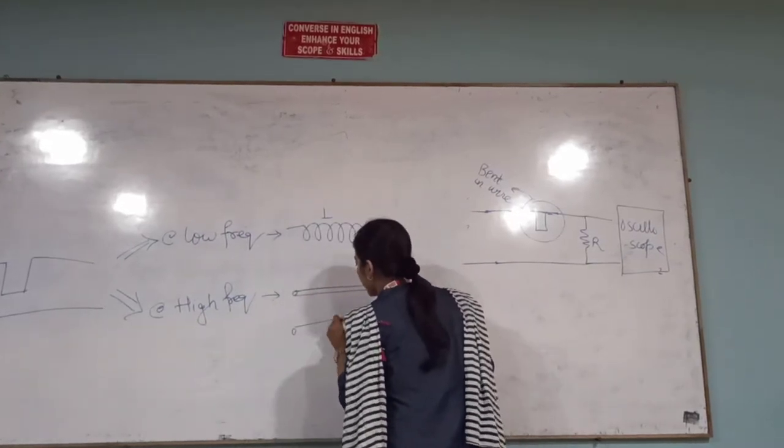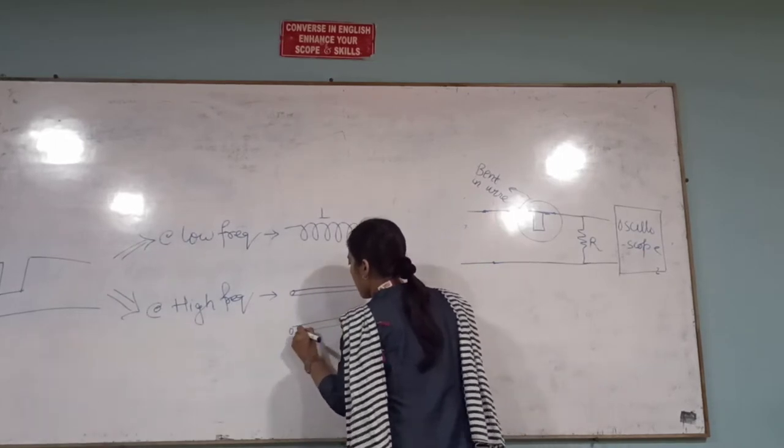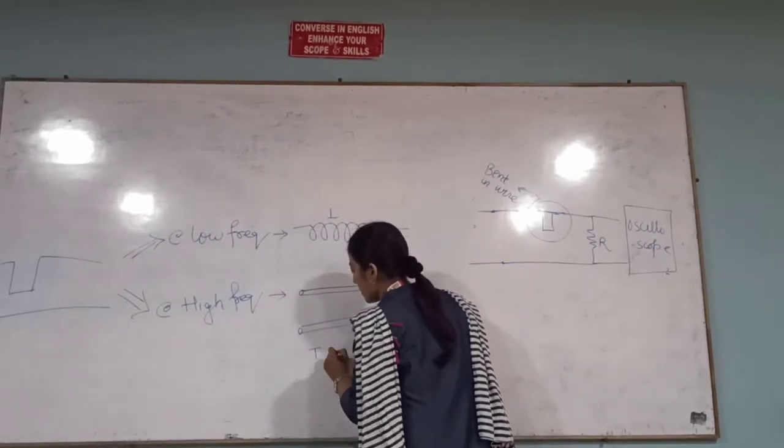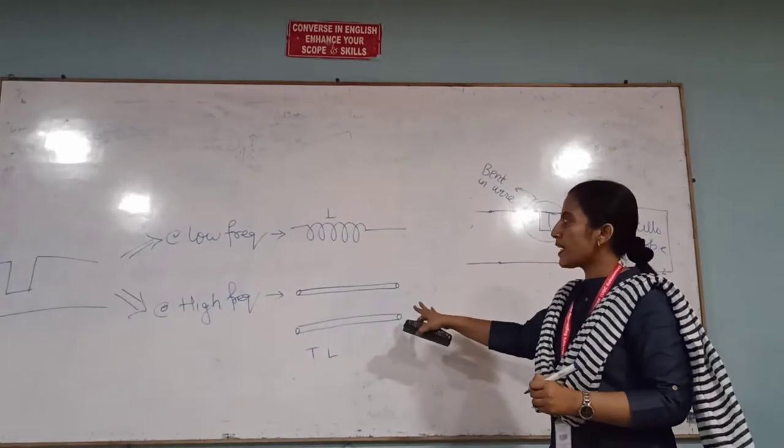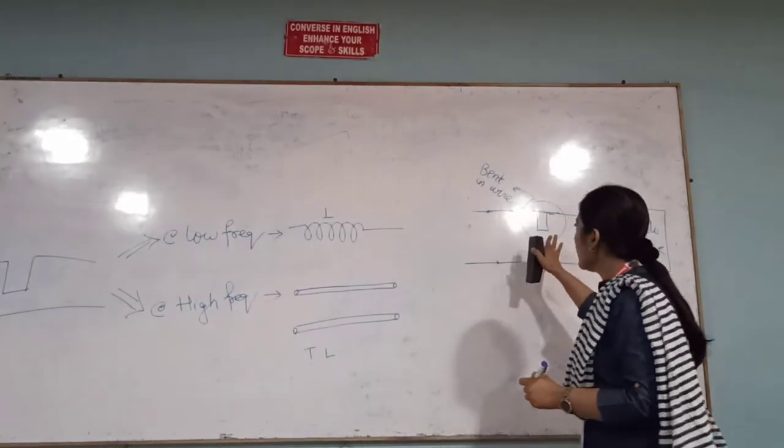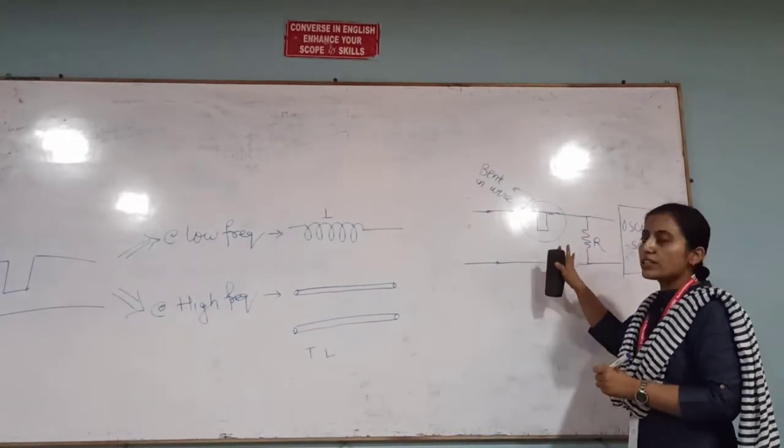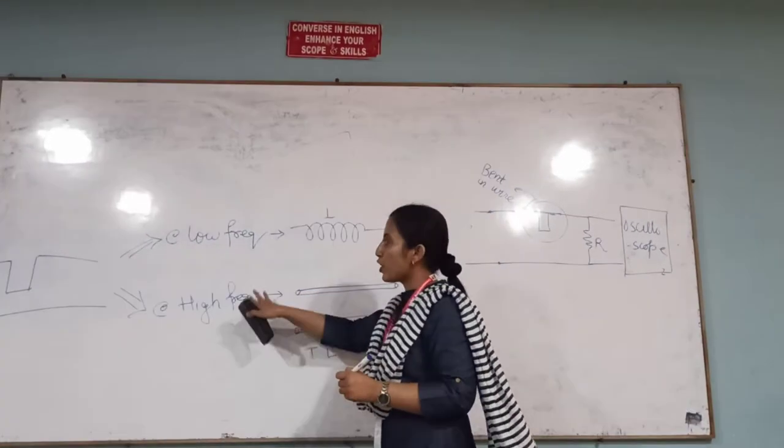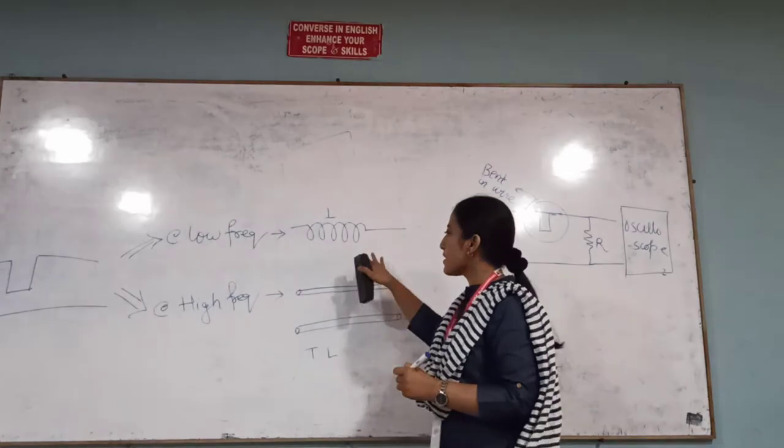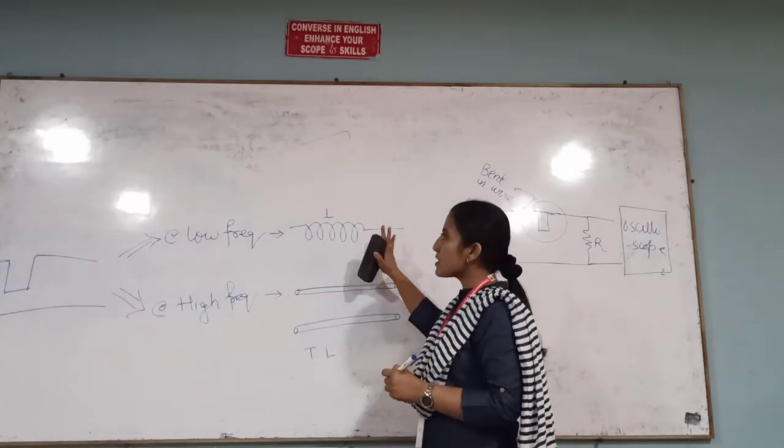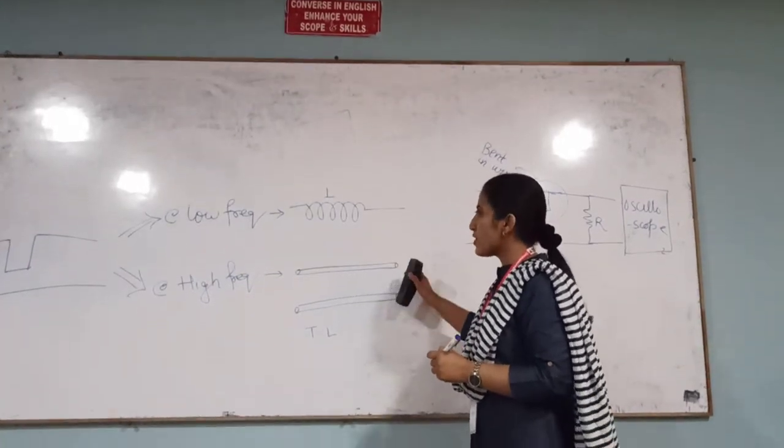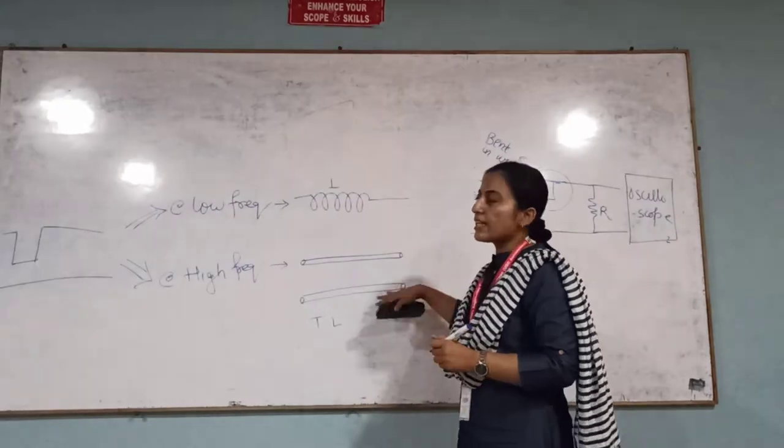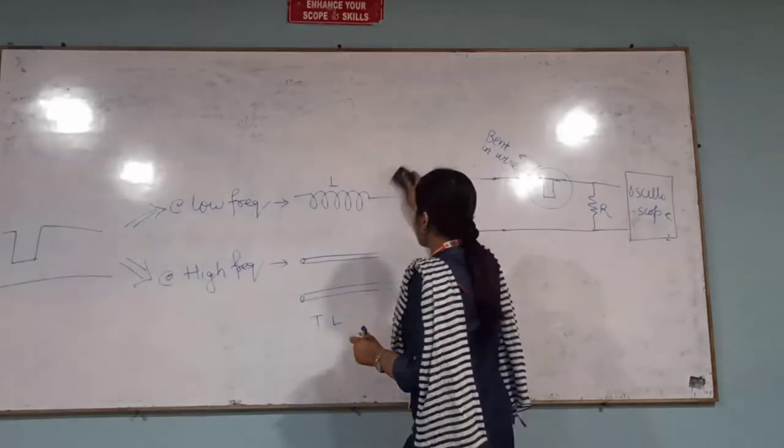And if we have high frequency, how they consider this bend? They will consider this bend as a transmission line. So they have the differences. For circuit theory they will just take a straight line, but for EMT people, for two different frequencies they will consider for low frequencies inductors and for high frequencies transmission line. These all things we will be studying in transmission line chapter.